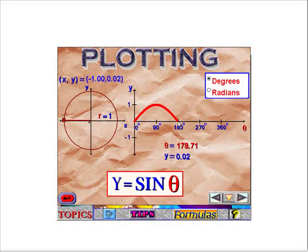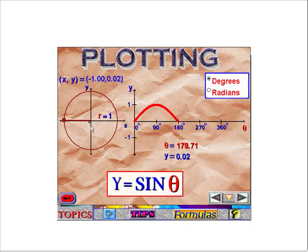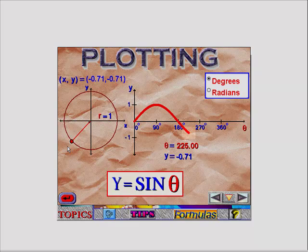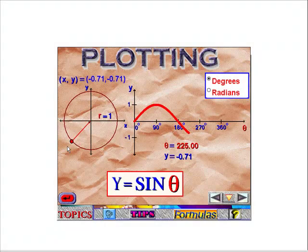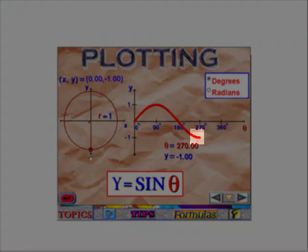Now if I keep going, say I go to 45 degrees in quadrant 3, that's still equal, or approximately equal to 7 tenths, but remember in quadrant 3, sine is negative. So instead of 7 tenths, it's negative 7 tenths. And if we keep going down to 270 degrees...